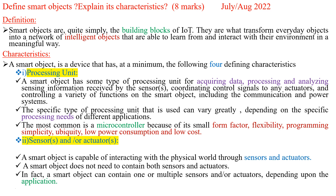The question is: define smart objects and explain its characteristics. This is asked for eight marks in the July-August 2022 exam. The question consists of two sections: define smart objects, and explain its characteristics.